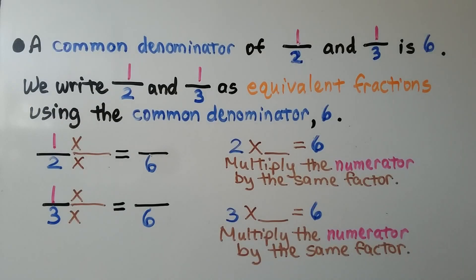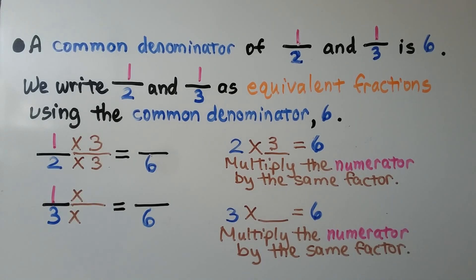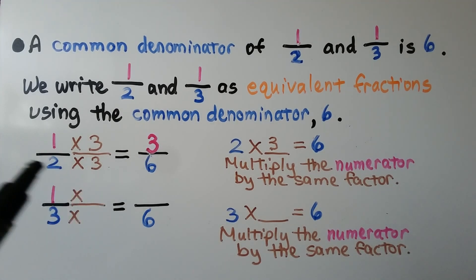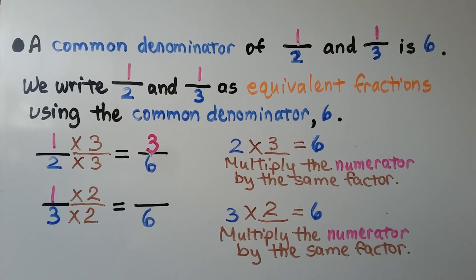So 1/3 and 1/2 have 6 as a common denominator. We write 1/2 and 1/3 as equivalent fractions using the common denominator 6. We have 2 times some number is equal to 6 — that would be 2 times 3. We multiply the numerator 1 by the same number 3, and 1 times 3 is equal to 3. So 1/2 and 3/6 are equivalent fractions. We do the same thing for 1/3: 3 times some number is equal to 6, that would be 3 times 2. We multiply the numerator by 2, and find that 1/3 and 2/6 are equivalent fractions.